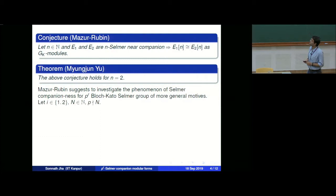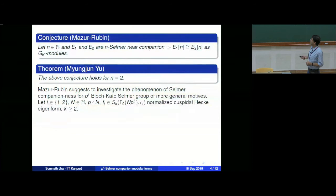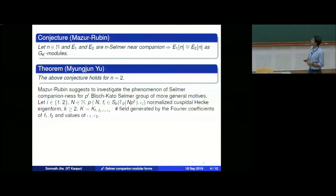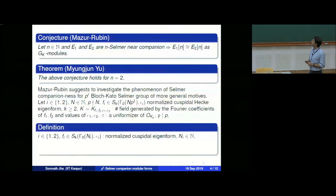Towards this, we first make a definition of what p^r-Bloch-Kato Selmer companion means for two modular forms, so I need some notation. Take a prime p not dividing N. Let f_1, f_2 be two modular forms of weight k and Nebentypus ε_i. Let K be the field generated by the Fourier coefficients of f_1, f_2, and the values of the Nebentypus, and let π be a uniformizer.